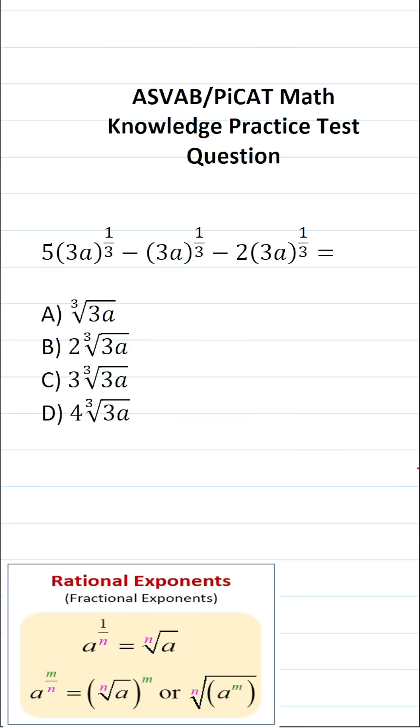This math knowledge practice test question for the ASVAB and PiCAT says 5 times 3a to the one-third minus 3a to the one-third minus 2 times 3a to the one-third equals. We want to simplify this expression.